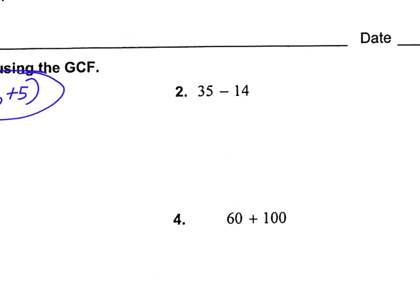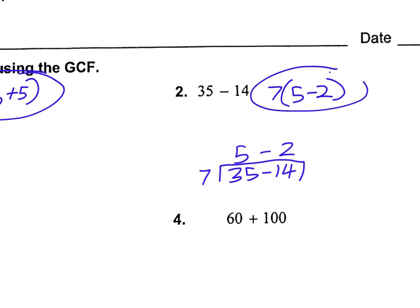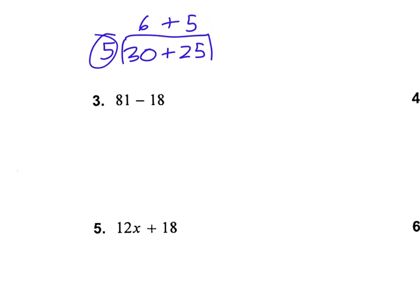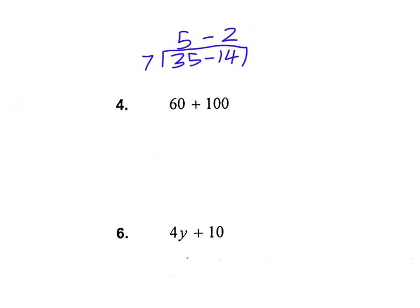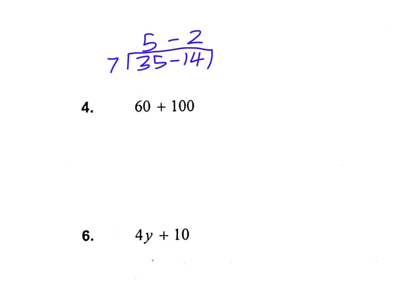Number 2: 35 minus 14. Put it in our cake. What numbers go into it? 7. 7 goes into 35 five times and into 14 twice. So we get 7 times the quantity 5 minus 2. Number 3: 81 minus 18. 9 goes into both of those — into 81 nine times and into 18 twice. So we get 9 times the quantity 9 minus 2. Once you get doing this, it's not that hard — the key is knowing your multiplication tables.